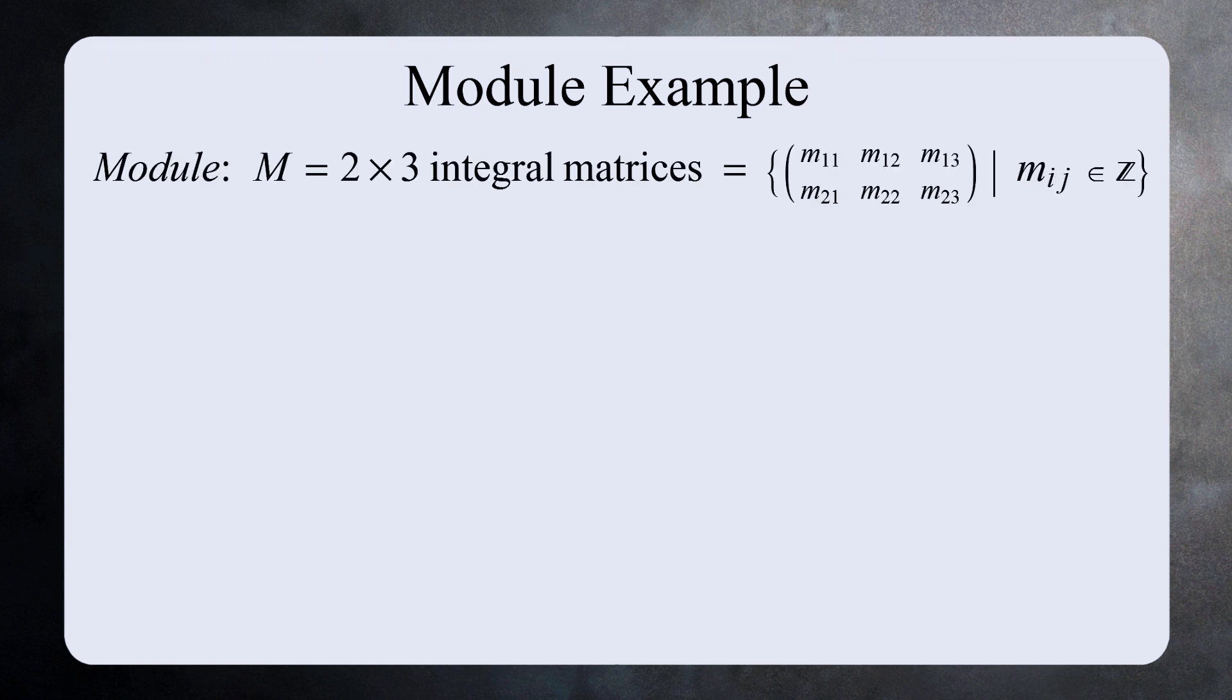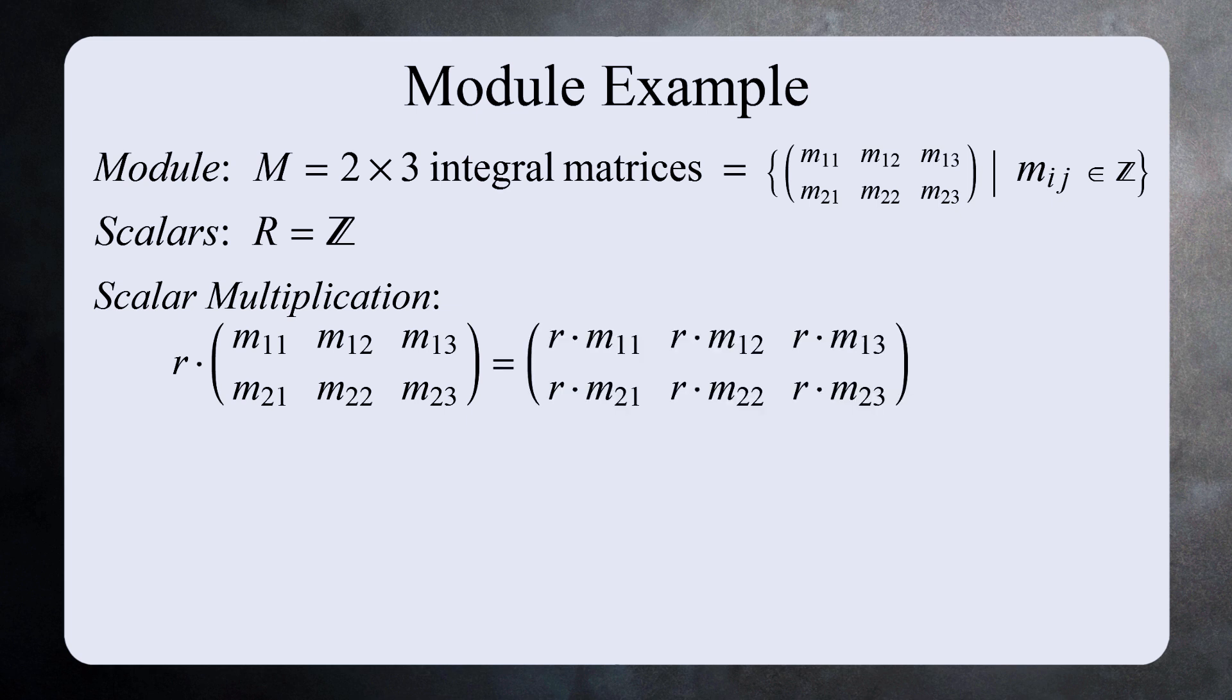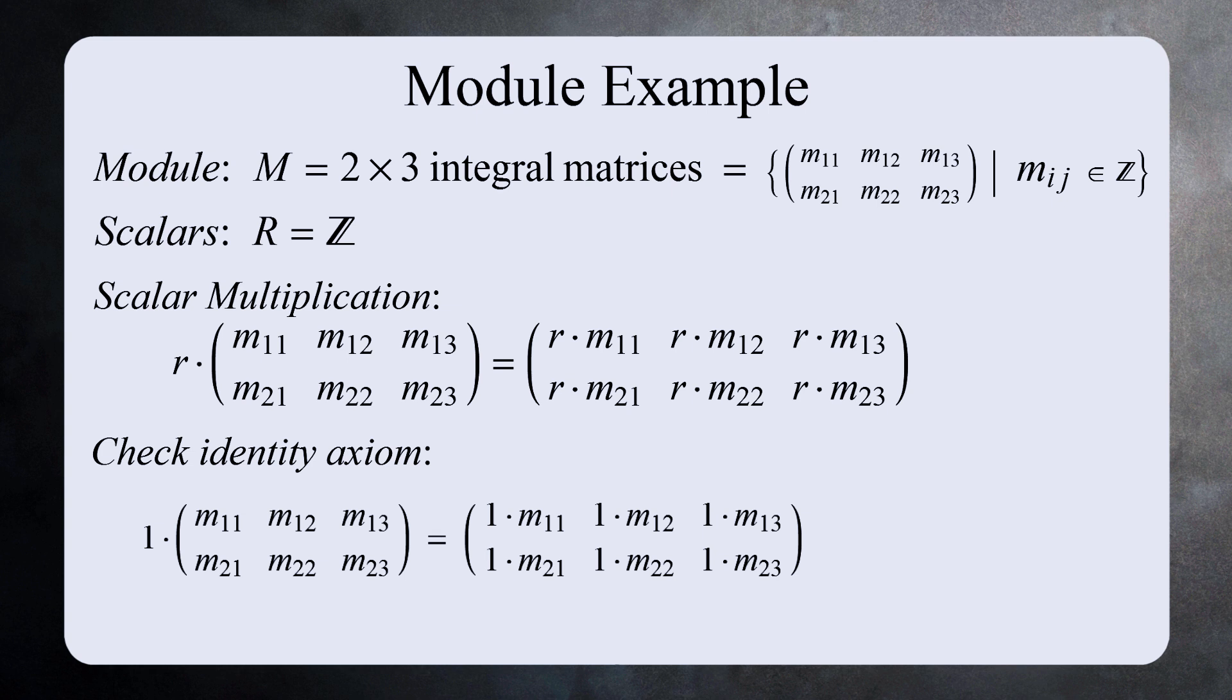For our next example, look at the 2 by 3 matrices where all the elements are integers. We can make this into a left Z module as follows. Define the multiplication of a matrix M by an integer R to be the matrix where every element is multiplied by R. Since we're just beginning with modules, let's practice checking the axioms by seeing if the identity axiom holds. If you multiply any matrix M by the identity 1, any integer multiplied by 1 is itself, so we get the same matrix. So the identity axiom checks out.